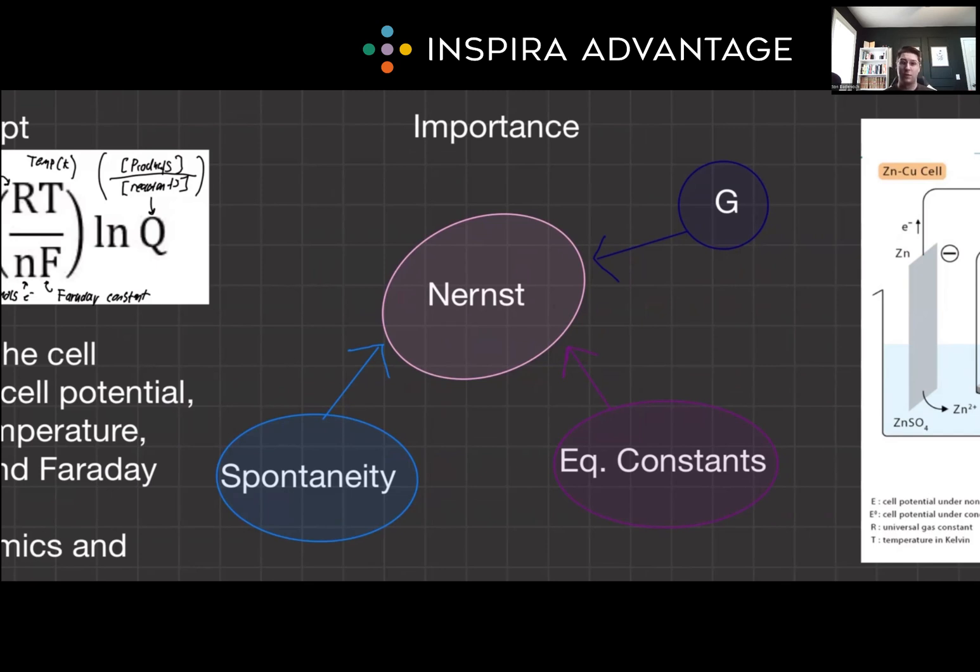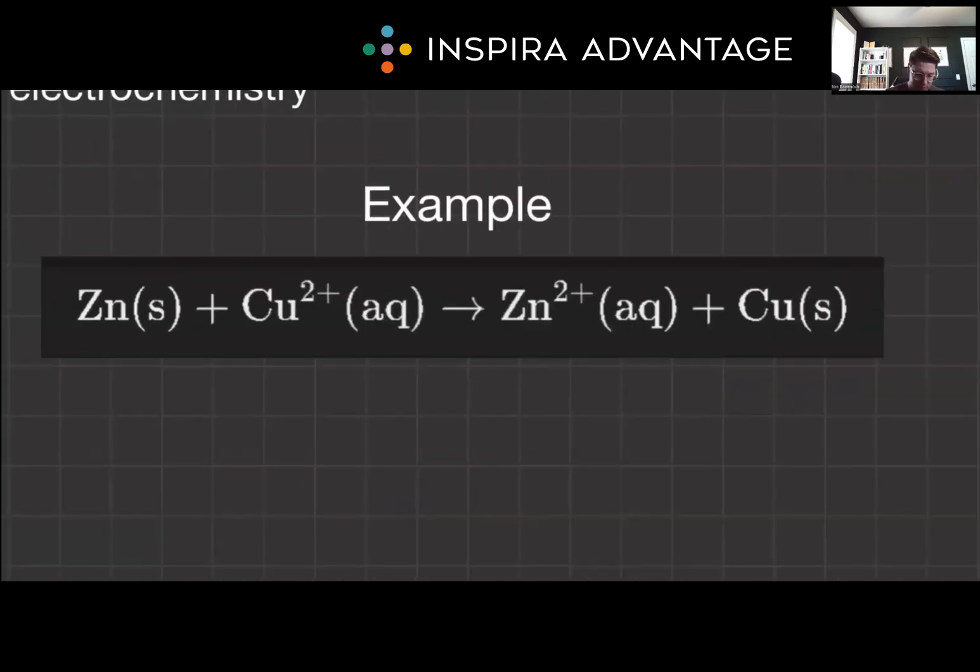And three, it integrates concepts like reaction spontaneity, Gibbs free energy, and equilibrium constants into the realm of electrochemistry. So let's run through an example together here. Imagine a simple electrochemical cell. The potential difference between the two half cells changes as the concentration of ions varies. This variation is precisely what the Nernst equation is going to predict.